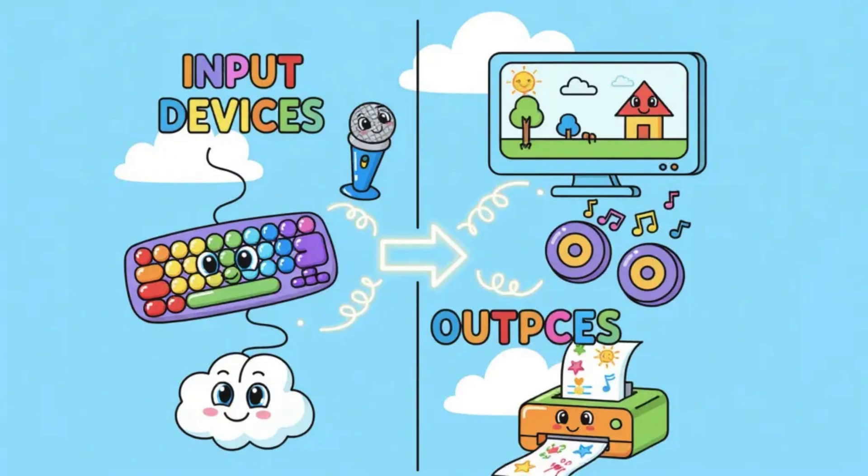So, to make it simple, input devices are what we use to talk to the computer, while output devices are what the computer uses to talk back to us. Both are essential because without input devices, the computer would not know what we want, and without output devices, we would never know what the computer is doing.